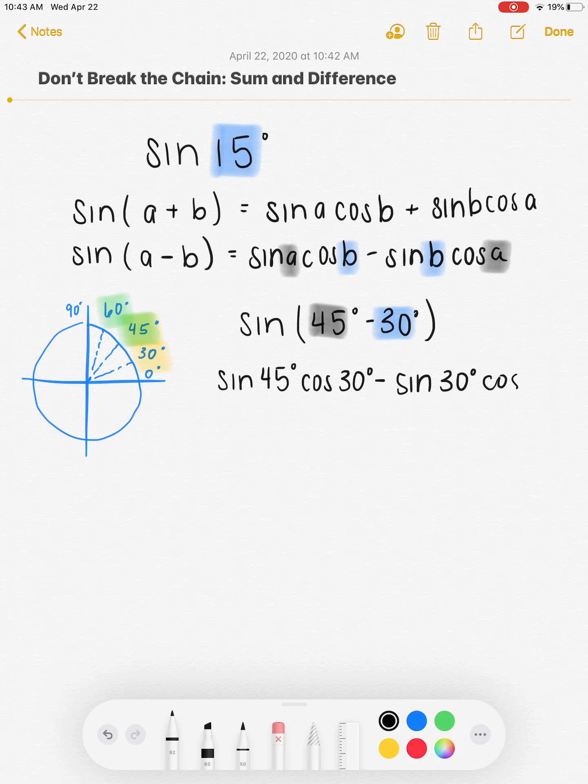So I'm going to end up with sine of 45 degrees cosine of 30 degrees minus sine of 30 degrees cosine of 45 degrees. Now I'm going to have to go back to my unit circle and remember that my coordinate for 30 degrees is root 3 over 2 and 1 half, and my coordinate for 45 degrees is root 2 over 2, root 2 over 2.